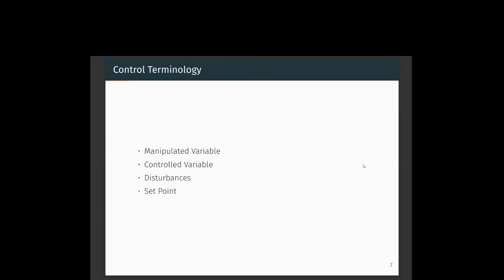These are the main control terminologies we will use further in lectures. The first is manipulated variable, the second is controlled variable, and then disturbance and set point. The set point is the user-defined desirable value for the parameter. The manipulated variable is what we modify to change the controlled variable within the plant. The controlled variable is what we are trying to control, and disturbances are external factors the user has no control over. We manipulate the manipulated variable so that it can also account for disturbances affecting the system. See you in the next lecture.